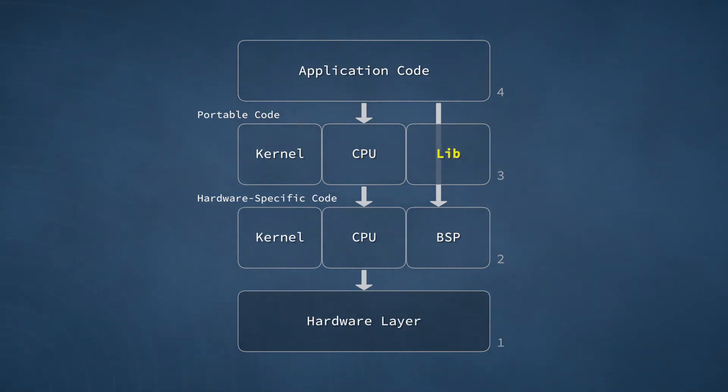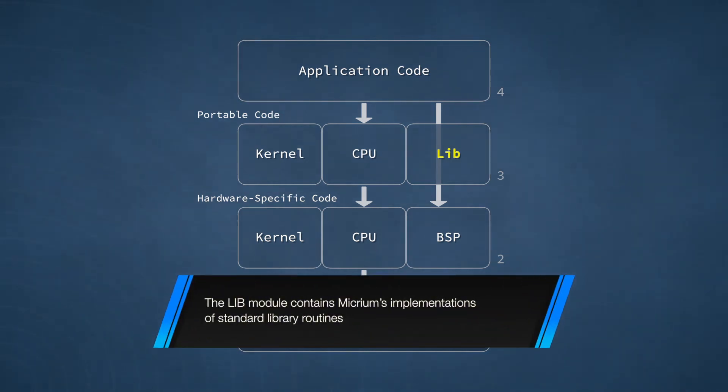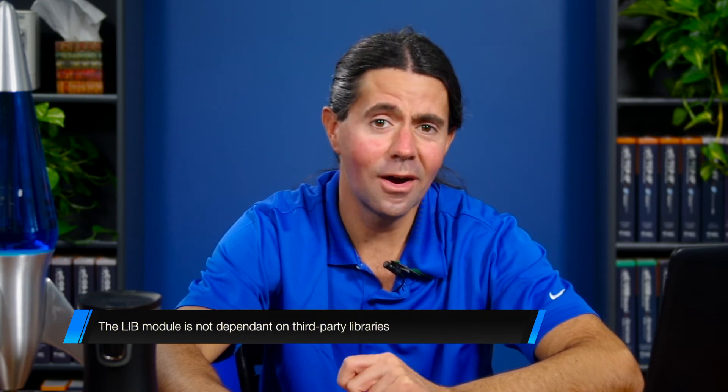Similarly, the lib block contains code that is also used by several Micrim OS modules. In this case, the code consists of declarations of standard library routines, such as memcopy and string length. Micrim OS doesn't make any calls to standard C library functions. We provide our own versions of these functions because there can be issues with the library implementations available from third parties. Many of these issues revolve around the use of library functions in safety-critical applications. It can be very difficult for developers of safety-critical systems to certify code that invokes standard library functions. Depending on the toolchain, the functions may not be available in source code form, and even when they are, there may be problems certifying the code due to a lack of requirements documentation or failure to follow standards. The functions in the lib block give safety-critical developers a much better foundation for a certified product.